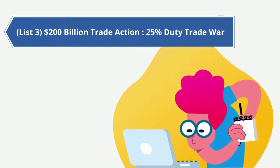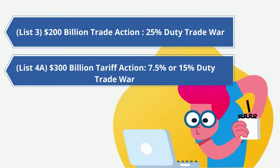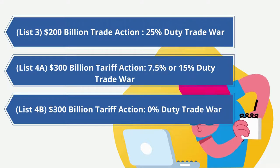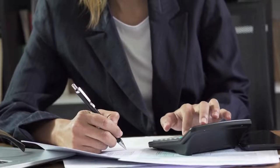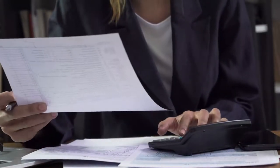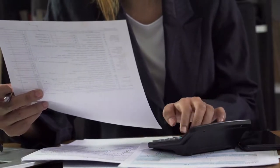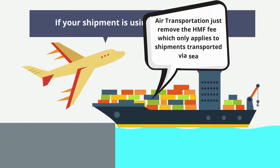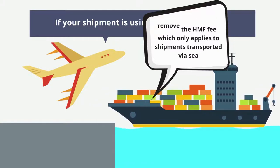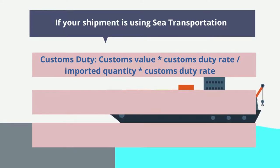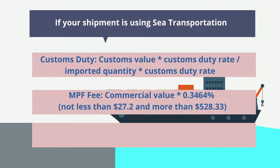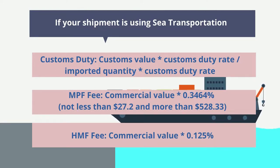Note: List 3 is the $200 billion trade action with a 25% duty trade war. List 4A is the $300 billion tariff action with 7.5% or 15% duty trade war. List 4B is the $300 billion tariff action with 0% duty trade war. Next, calculate how much customs duties and tax you need to pay. After getting the current duty rates, calculate the import duty and total import tax. If your shipment is using sea transportation, for air transportation just remove the HMF fee, which only applies to sea shipments. Customs duty = customs value × customs duty rate × imported quantity × customs duty rate. MPF fee = commercial value × 0.3464%, not less than $27.20 and no more than $528.33. HMF fee = commercial value × 0.125%.